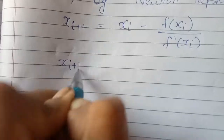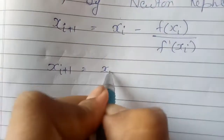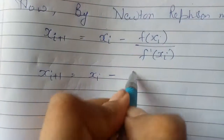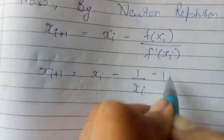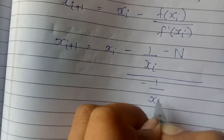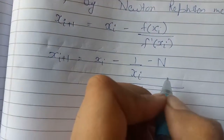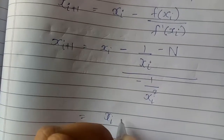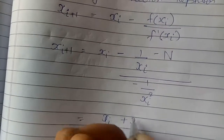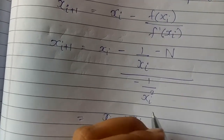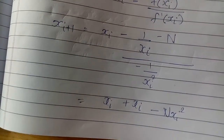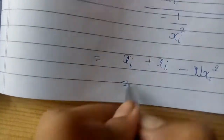Toh isme hum value put kar denge. x_{i+1} is equal to x_i minus — function ki value rakhenge upar: 1 upon x_i minus n — phir rakh denge f dash x: minus 1 upon x_i square. Isko solve karenge hum. LCM wagera lekar.